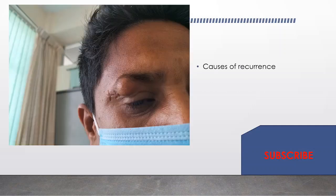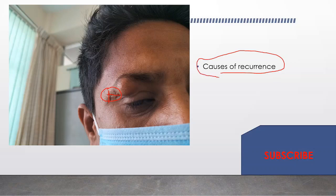If you find a previous scar mark over an external dermoid, that indicates recurrence. Describe the scar mark properly. The causes of recurrence include technical factors — the surgeon could not adequately remove the swelling — pathological factors such as multi-loculated or infected cysts where proper surgery could not be completed. These causes of recurrence are very essential to know if you find such a swelling in clinical practice.